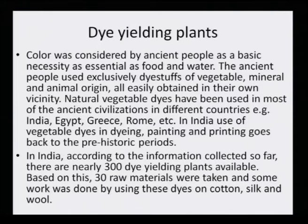Color was considered by ancient people as a basic necessity, as essential as food and water. The ancient people used exclusively dye stuffs of vegetable, mineral and animal origin — all easily obtained in their own vicinity. Natural vegetable dyes have been used in most ancient civilizations in different countries — India, Egypt, Greece, Rome, et cetera. In India, use of vegetable dyes in dyeing, painting and printing goes back to prehistoric periods.